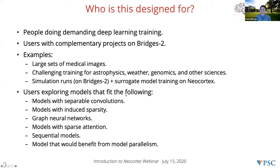The types of models we are targeting include dynamic models, models with separable convolutions, models where sparsity is induced, graph neural networks, models with sparse attention, sequential models, and — very importantly — models that demand model parallelism to be trained. Nick will talk about this in more detail. The system we are deploying is excellent at exploiting sparsity, which is very present in deep learning models, and it does so in an interesting way: you don't perform operations or waste energy computing gradients where you have zeros.